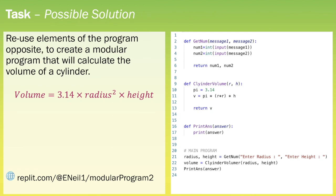Here we have a possible solution based on using the previous program. We still have a function called get_num that gets two numbers from the user. However, on line 21 you'll see that we've specified the actual parameters as 'enter radius' and 'enter height'. We then have a new function called cylinder_volume that requires a value for r and a value for h — these are the formal parameters. It calculates the volume as pi times r squared times h, returning v. On line 22, when we call cylinder_volume, the radius and height become the actual parameters and the value for v is stored in volume.